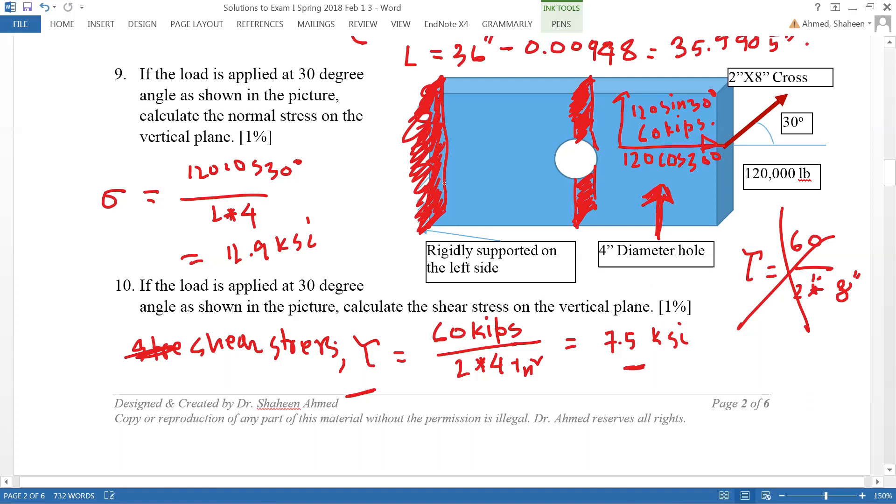Whenever you are asked to calculate the stress, you always try to calculate the highest or maximum stress. In this case where it's gonna fail is at these big holes, so that is 7.5 Ksi.